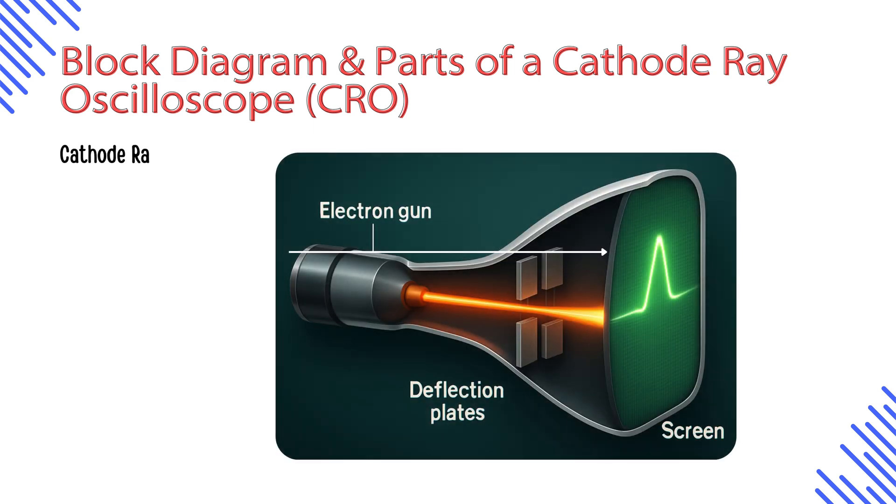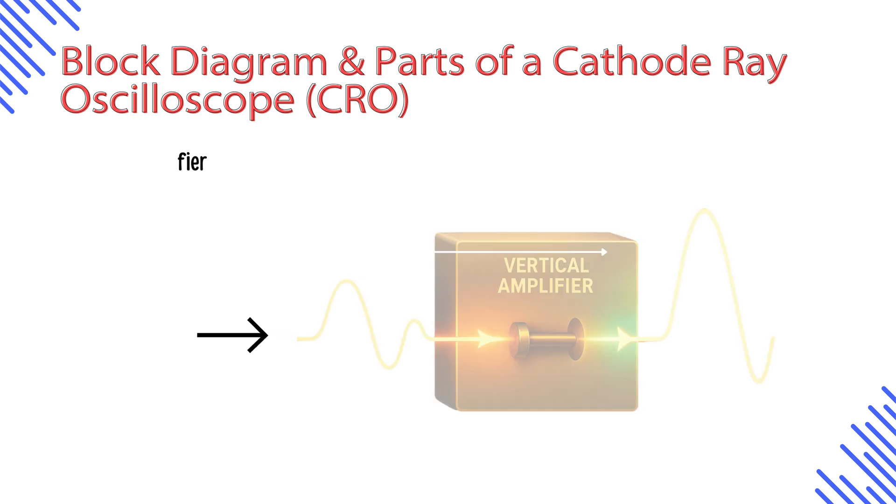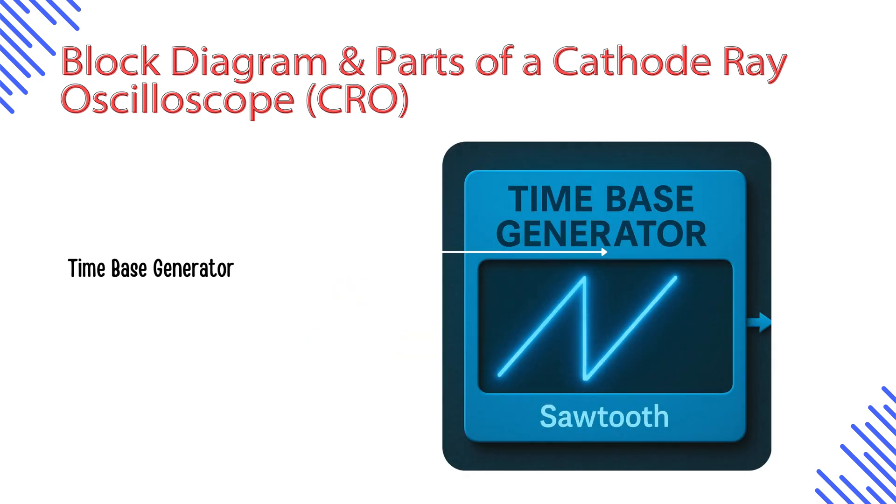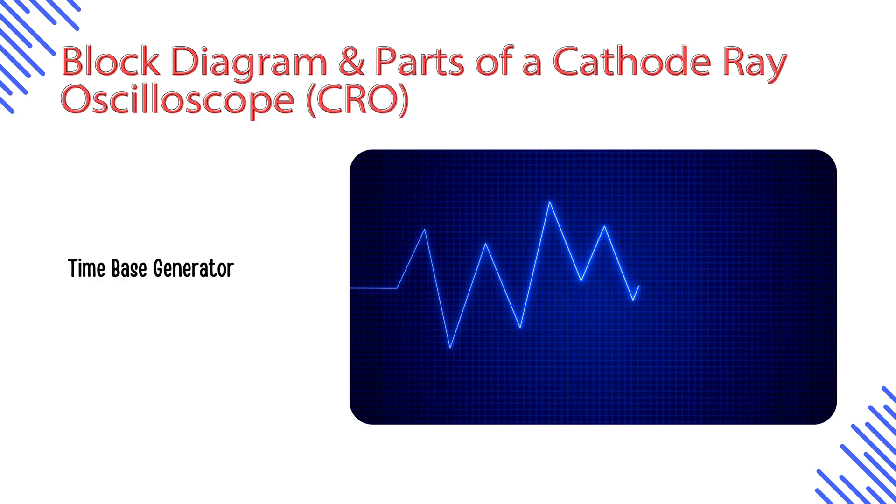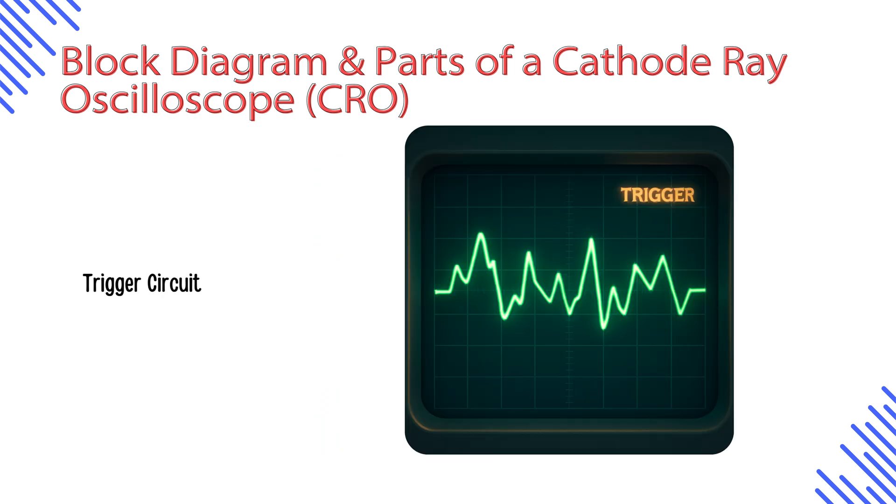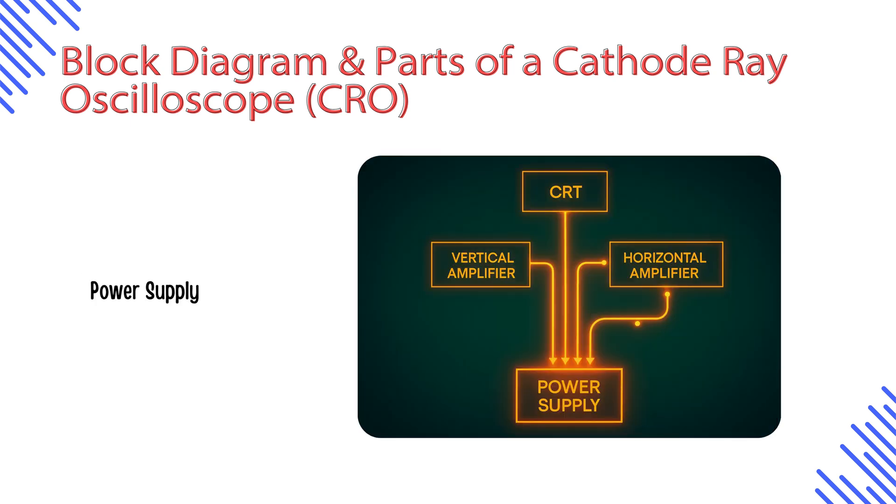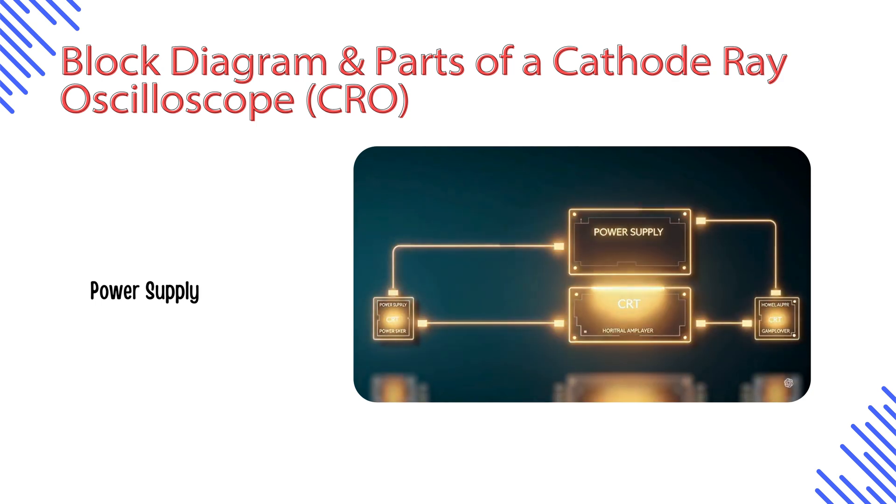The CRT is the heart of the CRO. It shoots electrons onto a fluorescent screen to create visible light. The vertical amplifier boosts the input signal so it can move the electron beam vertically. The time-based generator creates a sawtooth wave that controls the horizontal movement of the beam. This signal passes through the horizontal amplifier to control left-to-right beam motion. The trigger circuit synchronizes the sweep with the signal for a stable waveform. The power supply distributes high and low voltages to the CRO components.